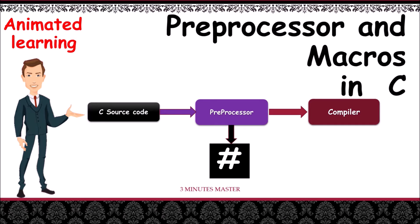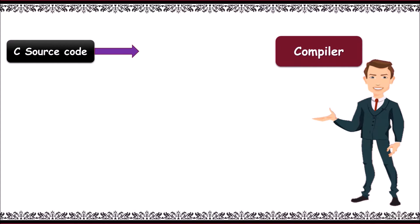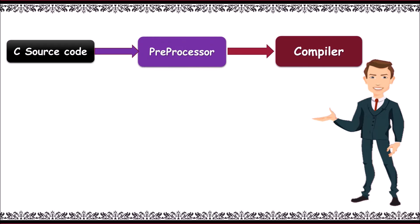Welcome to 3mm. Let's learn about preprocessors and macros in C. We know that first we write C source code and then compile it with a compiler. In between these two, the preprocessor works. The C preprocessor is a macro processor that is used automatically by the C compiler to transform your program before actual compilation.